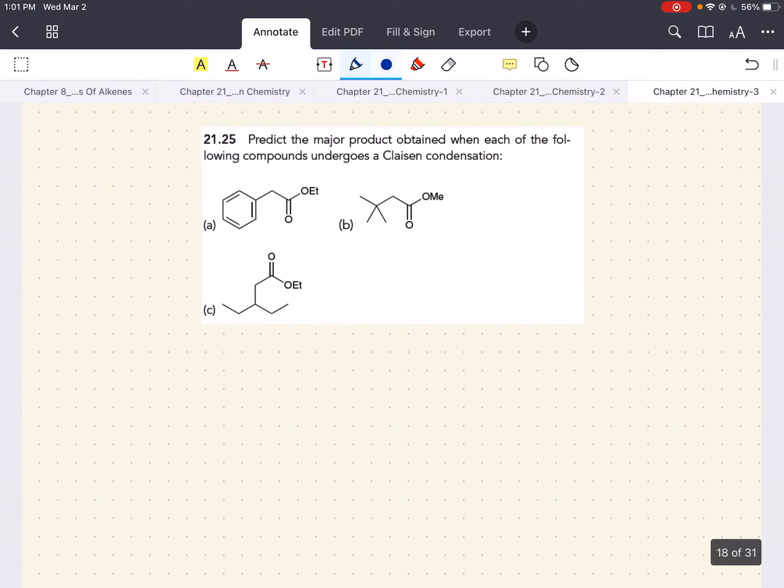All right, now we want to do this problem. Predict the major product obtained when each of the following compound undergoes a Claisen condensation. So, here we have, I'm going to write this as phenyl because I don't want to draw that ring every time. It'll get messy here. We have this starting ester.